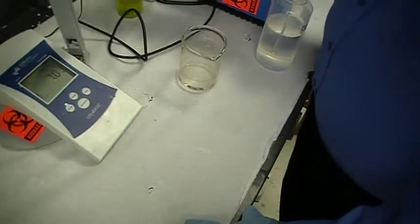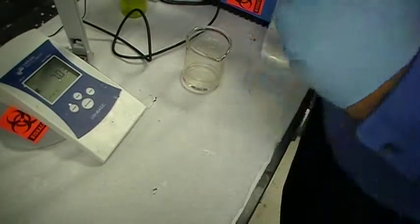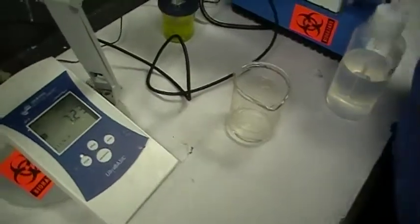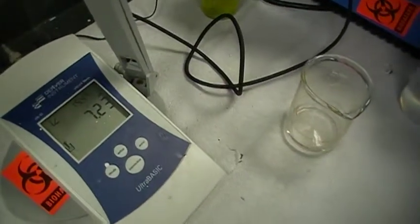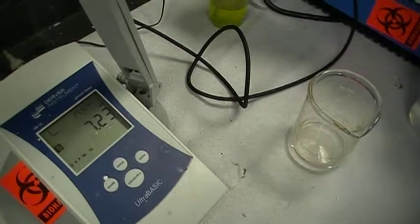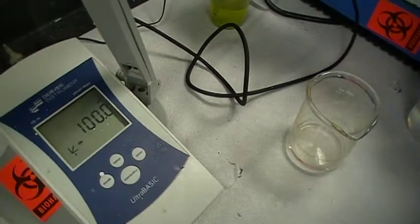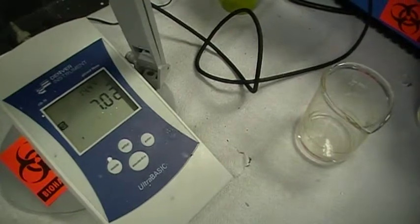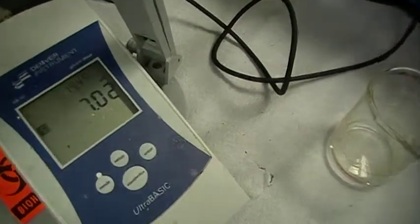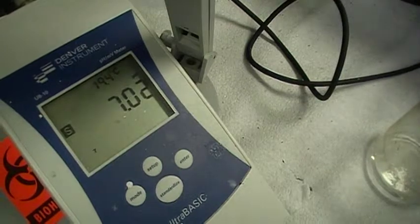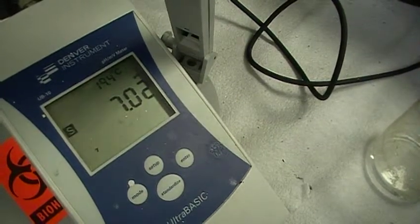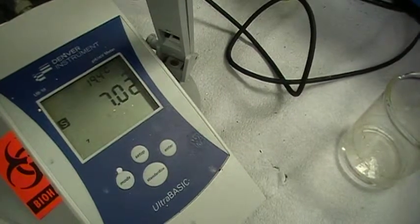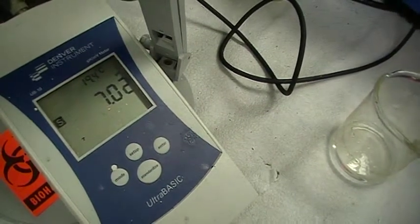And then you press standardize. And you wait. And it's going to read and read. And when the S appears, and when all the numbers stop blinking, and the S appears on the left hand side, it's ready. The pH is 7.02. It's not quite 7 but it's close.